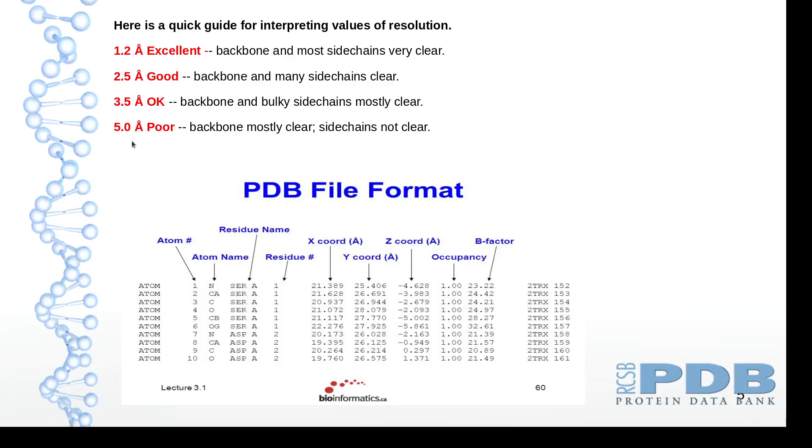5 angstrom is a poor structure because backbone is mostly clear but the side chains are not clear. And as a protein chemist, mostly all the critical stuff are related with the protein side chains like binding or orientation, somehow gating, flipping.